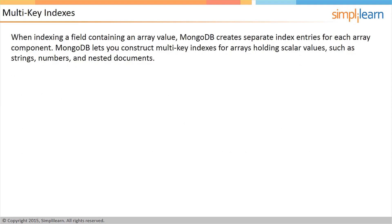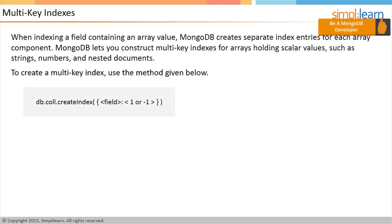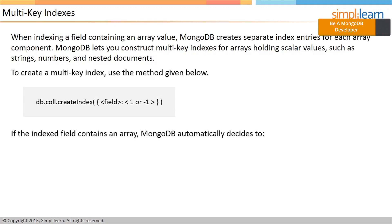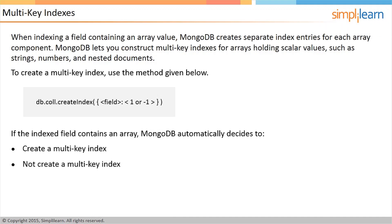When indexing a field containing an array value, MongoDB creates separate index entries for each array component. Multi-key indexes match array elements with documents containing arrays and select them. You can construct multi-key indexes for arrays holding scalar values such as strings, numbers, and nested documents. To create a multi-key index, use the db.collection.createIndex method. If the indexed field contains an array, MongoDB automatically decides to create a multi-key index; you do not need to specify the multi-key type explicitly.